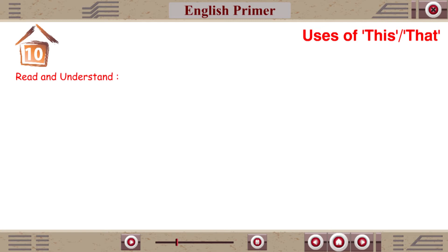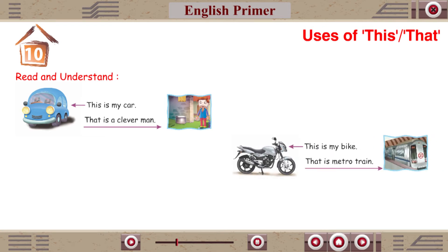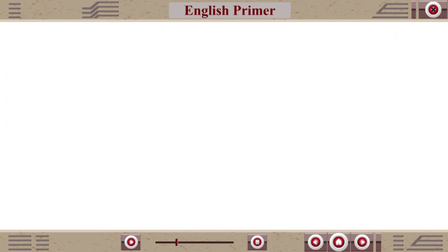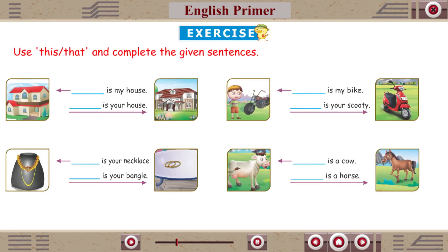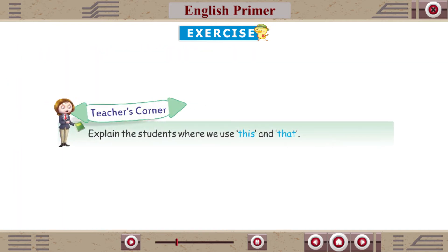Read and understand: This is my car. That is a clever man. This is my bike. That is a metro train. This is my pet dog. That is a wild animal. Exercise: Use this or that to complete the given sentences. Teacher's Corner: Explain to students where we use this and that.